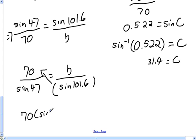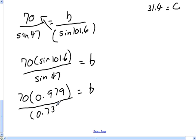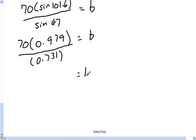So I easily isolated B. All I have to do now is solve. And sine 47, we'd already figured out earlier, 0.731. Multiply 70 times 0.979.